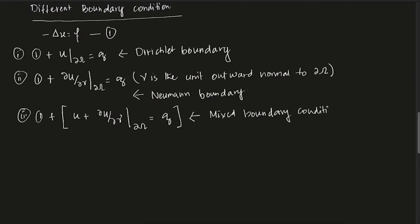There are still other conditions. It may happen that on one part of the boundary u equals g, and on another part del u / del eta equals some function h. You can be given this equation with that sort of split boundary condition. There are different options, but for now we restrict ourselves to the Dirichlet boundary condition.